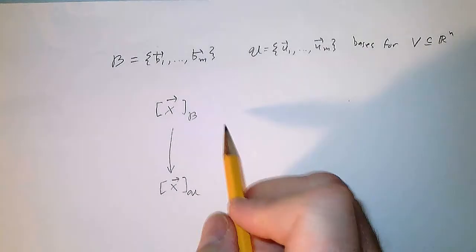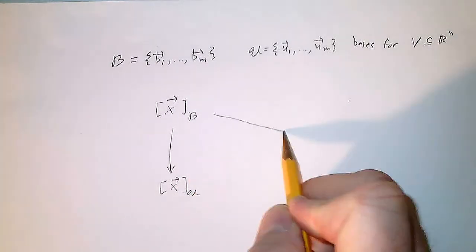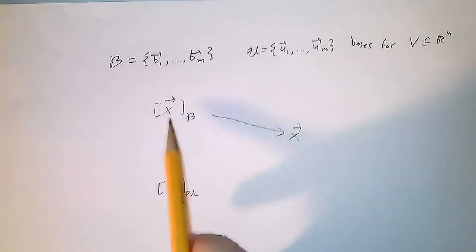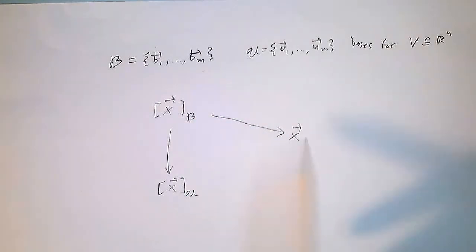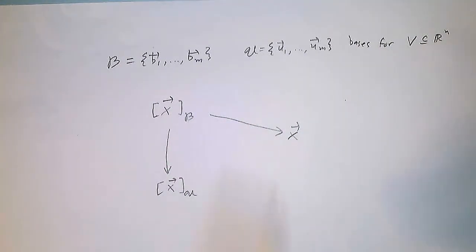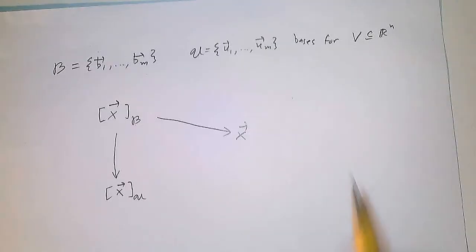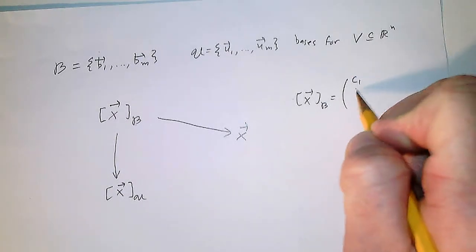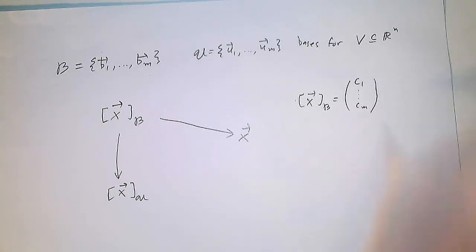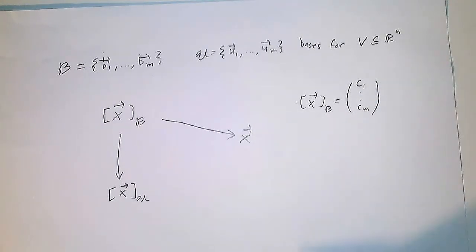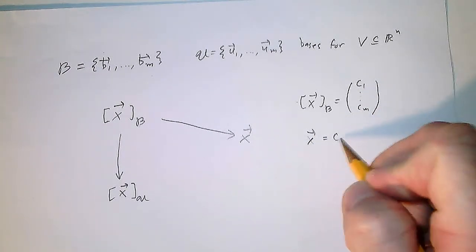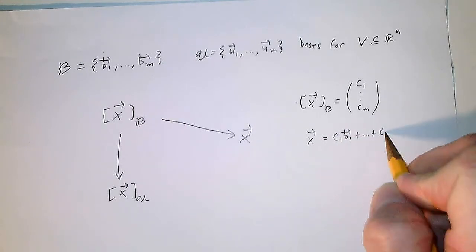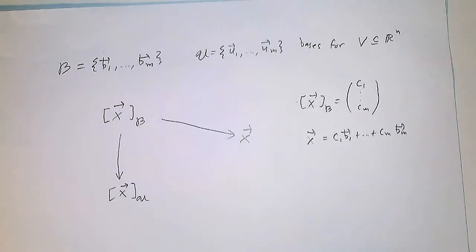So let me restate the question: if I have the coordinates of X with respect to B, is there a matrix to multiply it by to give me the coordinate vector of X with respect to U? Yes, but let's see how we can break this down. We certainly know how to change the coordinates of X with respect to B into X — how to recover X — because coordinates are the scalars that you use to make X.